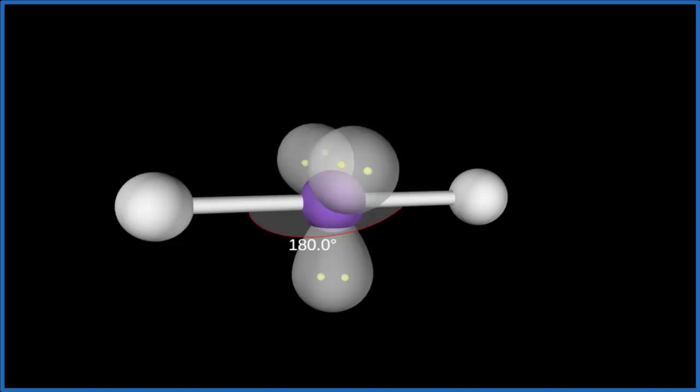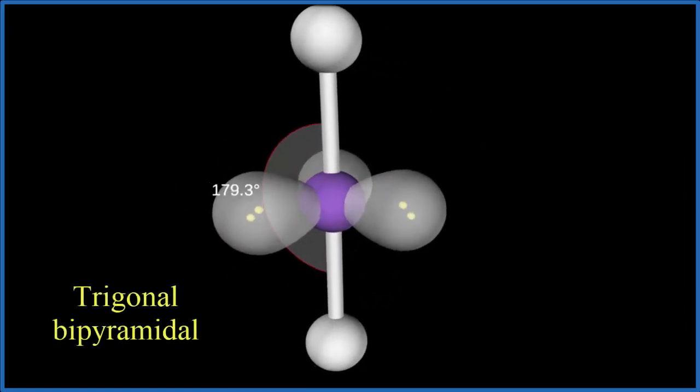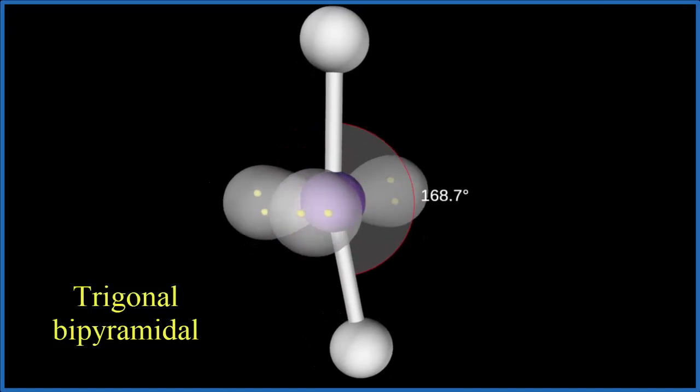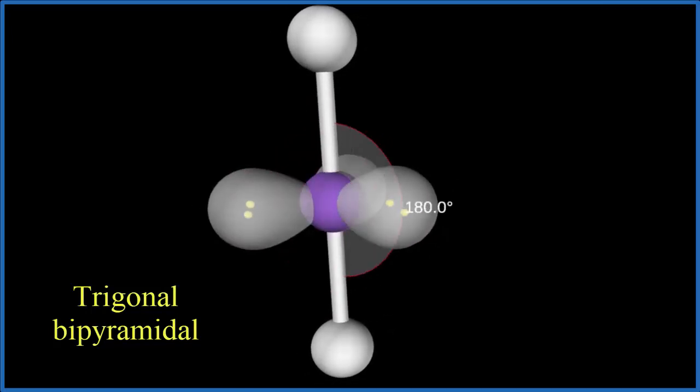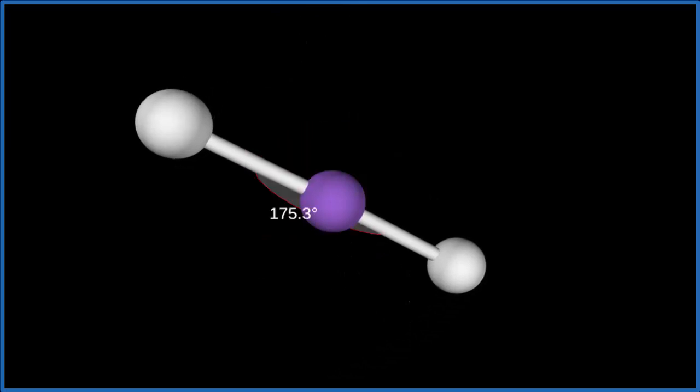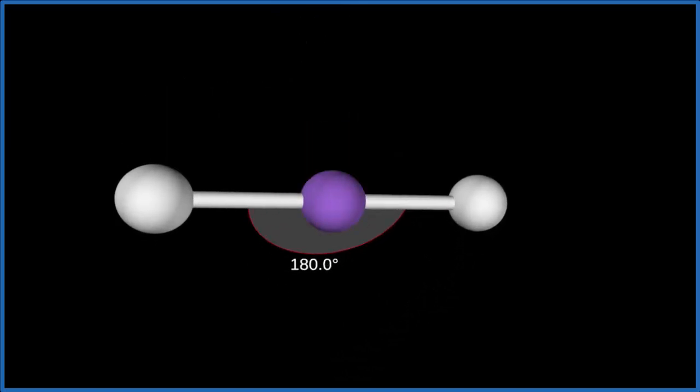If we wanted to talk about electron geometry, where we take into account all these lone pairs and the atoms, we end up with what's called a trigonal bipyramidal electron geometry. But for the molecular geometry, if we hide the lone pairs, we end up with a linear molecular geometry for KrF2.